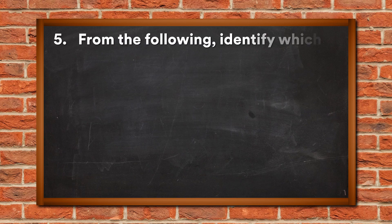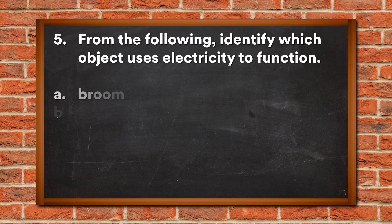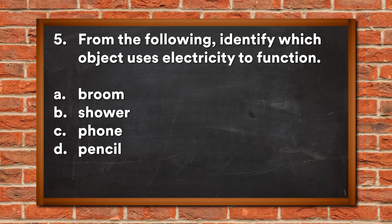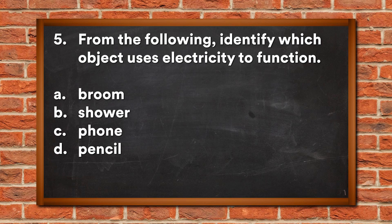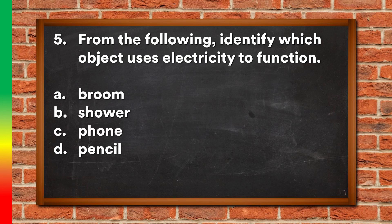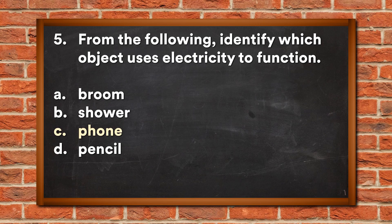Question 5: From the following, identify which object uses electricity to function. A. Broom, B. Shower, C. Phone, D. Pencil. The answer is C, Phone.